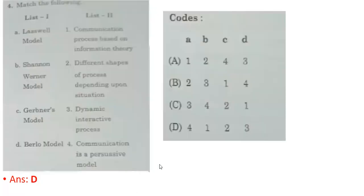Fourth question — match the following: List 1 consists of various models and List 2 consists of their importance. The correct option is D. For A, it is four — the Lasswell model is a persuasive model. For B, it is one — the Shannon-Weaver model is related to communication process based on information theory. For C, Gerbner's model is related to different shapes of process depending on the situation. For D, the Berlo model is related to dynamic interactive process.